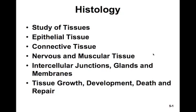In this chapter, we'll be studying tissues. We'll look at various types of epithelial tissue and various connective tissues. We'll then look at nervous and muscular tissues, intercellular junctions, glands and membranes, as well as tissue growth, development, death and repair.